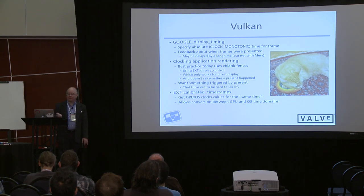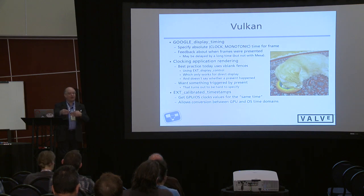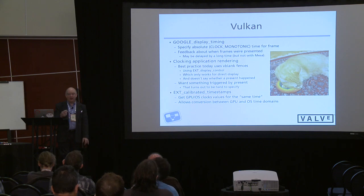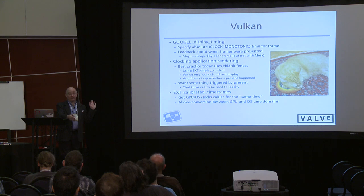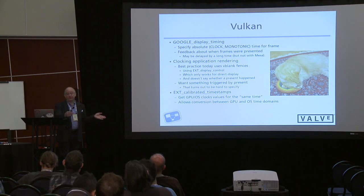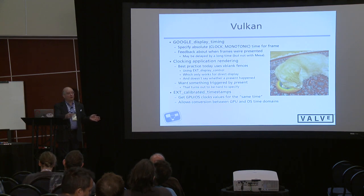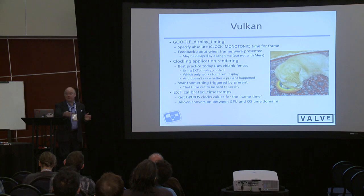Another interesting problem is that Vulkan provides no way for the application to clock itself by presentations — to say I want to always be two frames ahead or one frame ahead to keep the GPU busy. Vulkan doesn't provide any way to clock the application by displayed frames. It allows you to clock by available display buffers — you can only get an idle buffer — but the number of display buffers may need to be large for some corner cases. Typically we allocate four, which means you may get anywhere from one to four frames ahead of the display engine in your rendering, which is undesirable.